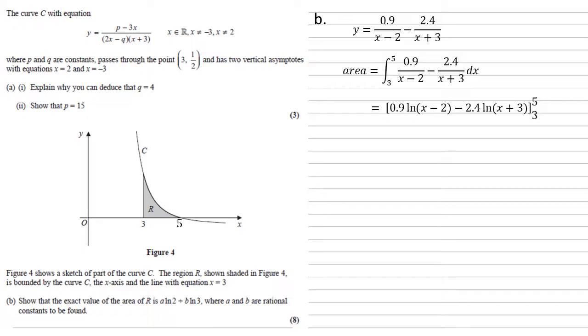Putting our 3 and 5 in, we get the 0.9 ln 3, so 3 has come from that 5 minus 2, minus 2.4 ln 8 minus 0.9 ln 1 plus 2.4 ln 6. Being very careful about our two negatives there.